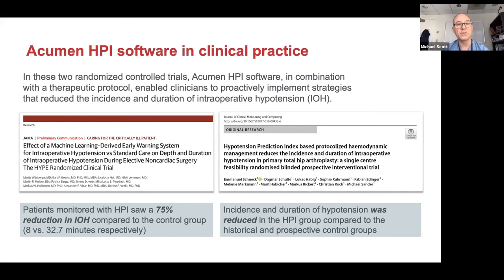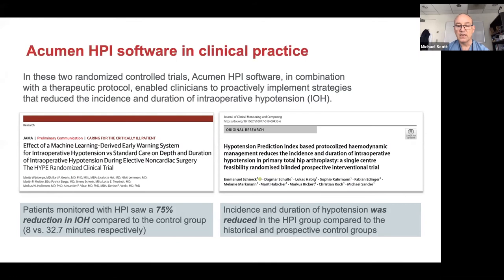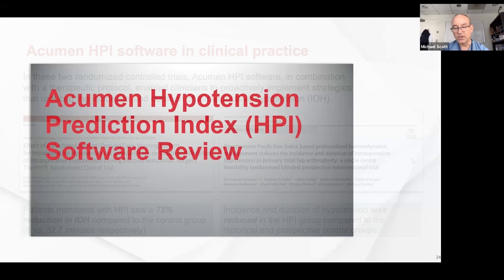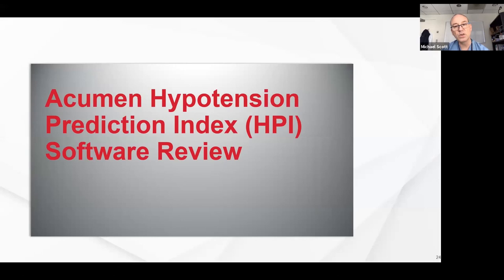It's not all bad news, because we're talking about Acumen HPI software today and how to use it. Two studies show that if you use it in the OR, you can affect change. Winchberg's study in JAMA Surgery used the HPI software and saw a 75% reduction in intraoperative hypotension compared to their control group — reduced from 32 minutes down to 8 minutes. That's significant, because the large data showed less than 10 minutes is obviously advantageous. Emmanuel Cannesson's group also showed you could reduce hypotension using HPI. I'll now hand over to Brad to give an overview of HPI and how it works.